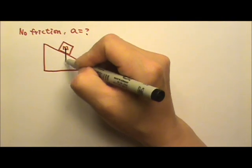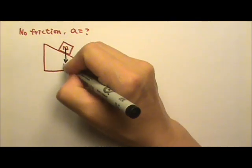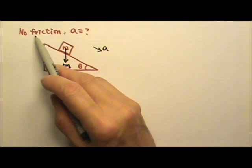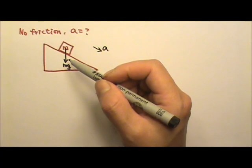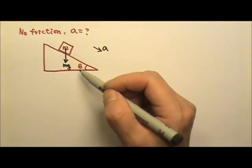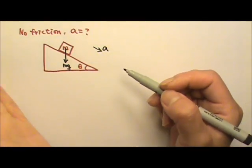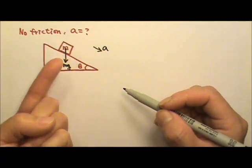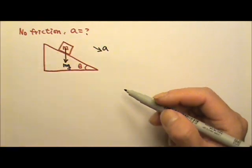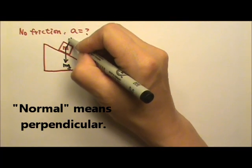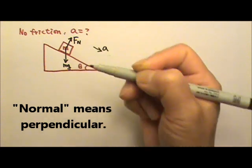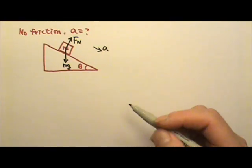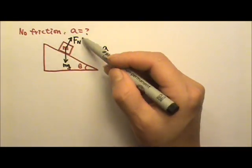The box has this non-contact force Mg. It is touching a contact surface. That contact surface does not give us friction, but there is a normal force. Normal force is always a pushing force, so the box gets pushed, and the pushing normal force is perpendicular to the contact surface. So the normal force will be slanted, perpendicular to the contact surface. It's not touching anything else, so we are done with the force diagram.